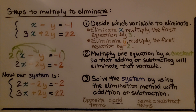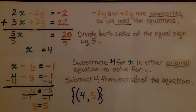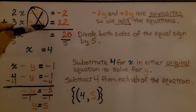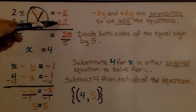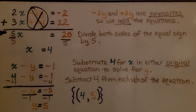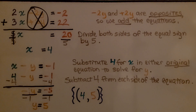Now we solve the system using the elimination method with addition or subtraction. Now that we have opposites — a negative 2y and a positive 2y — we can use addition to solve this system. Negative 2y and plus 2y are opposites, so we add the equations, eliminating the y variable term. We add 2x plus 3x to get 5x. When we add negative 2 to positive 22, we get positive 20. We divide both sides by the coefficient 5, giving us x equals 4.